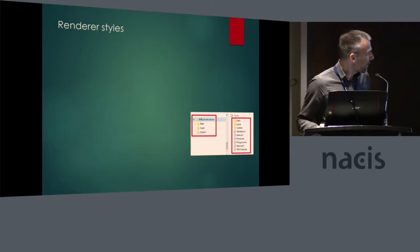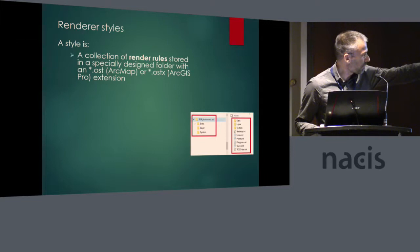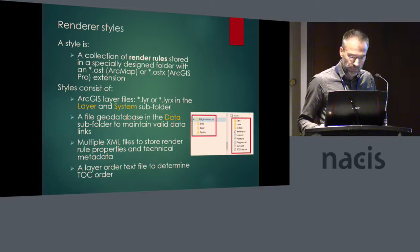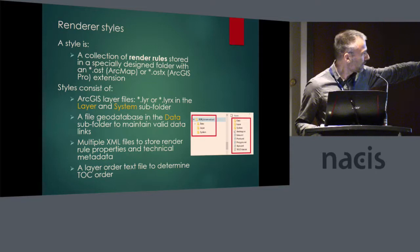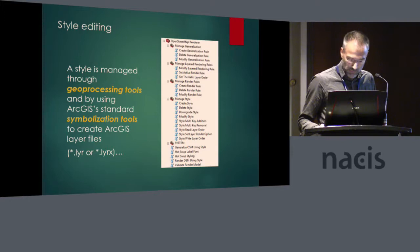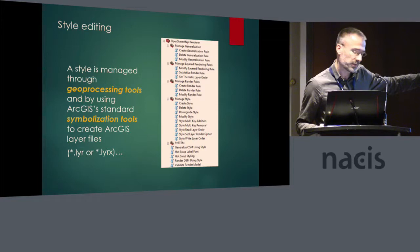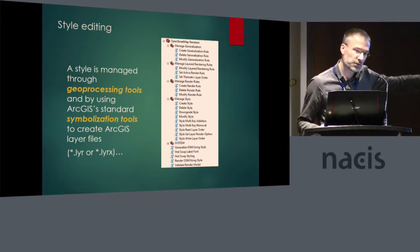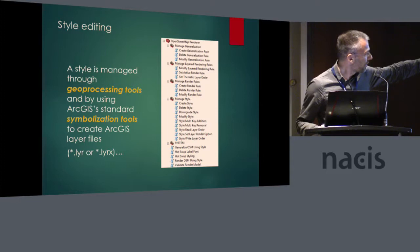What is the style? Style is a folder, and that folder has different directories with XML files in it. The style consists of layer files in the layer subfolder, a file geodatabase in the data folder, and multiple XML files to store renderable properties, plus a special text file that stores the order. You manage style through geoprocessing tools — those are all the user tools — and you use these tools to change the style and use the symbolization tools in ArcGIS to create the layer files.